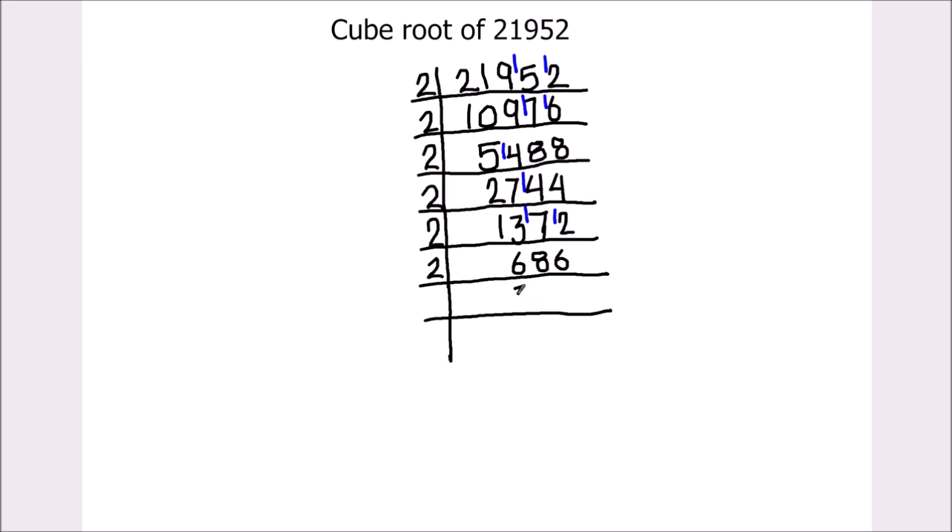Again we can use 2 to divide the number. 2 times 3 is 6. 2 times 4 is 8 and 2 times 3 is 6. Now 343 is an odd number and it is not fully divisible by number 2.